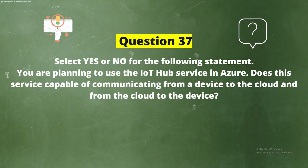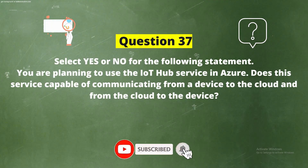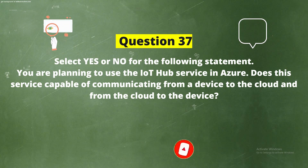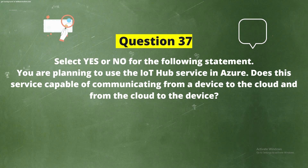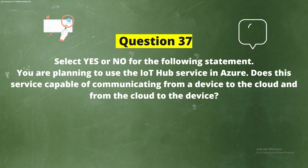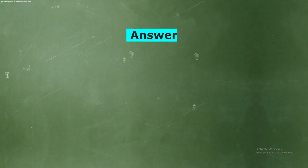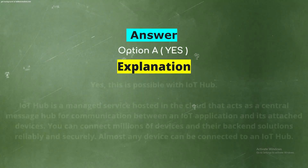Question 37: Select yes or no for the following statement — you are planning to use the IoT Hub services in Azure. Is this service capable of communicating from a device to the cloud and from the cloud to the device? The options are Option A, Yes and Option B, No. The correct answer is Option A, Yes.